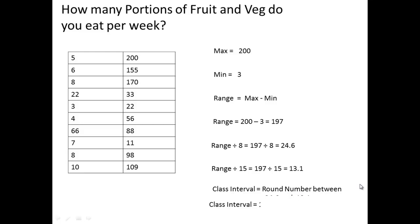A round number between 24 and 13 — I could go up in 15s: 15, 30, 45, 60. But 20 is very easy to count in: 20, 40, 60, 80, 100. So I prefer to go with 20. The class interval — the size of the jump in each category — is 20.